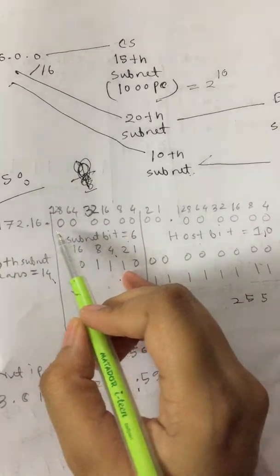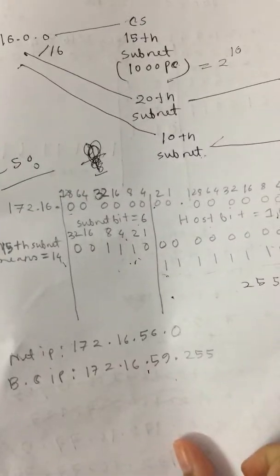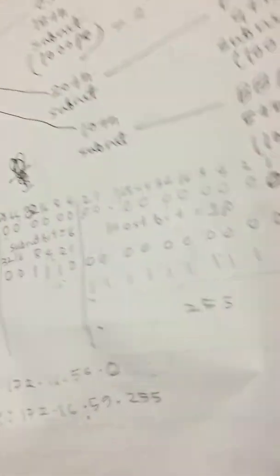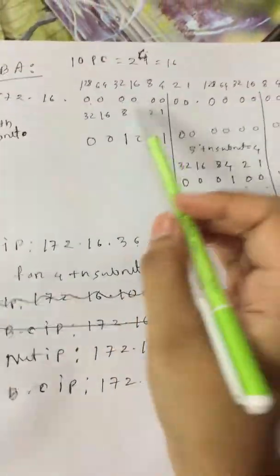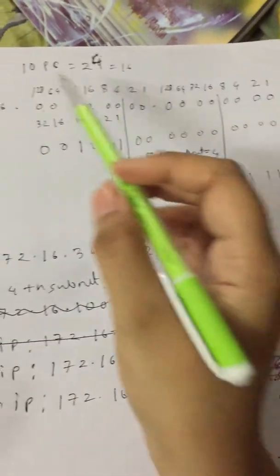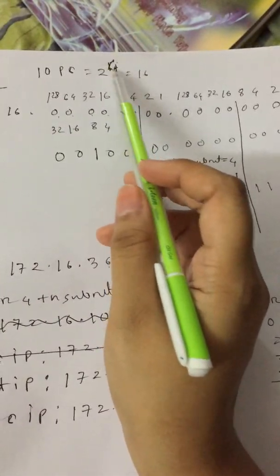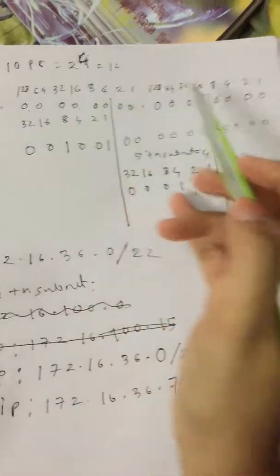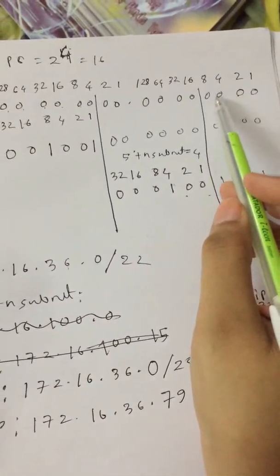There were 15 subnets. For Triple E department, first we took 20 subnets, then fourth subnet. Now for BBA department we are taking 10 subnets, then we will take fifth subnet. In CS department there were six subnets.